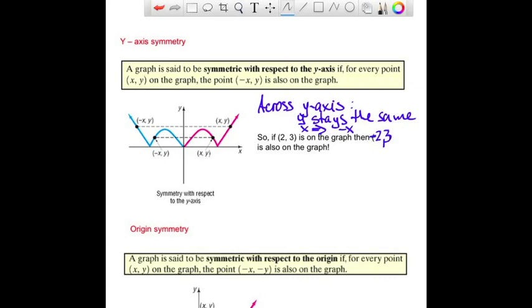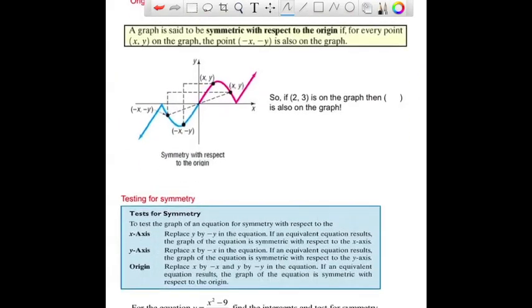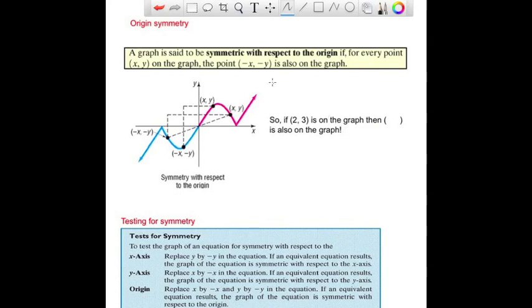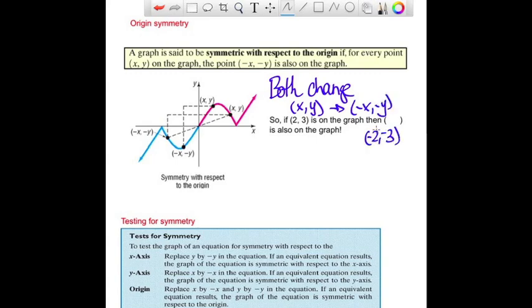And then we have one more type of symmetry, and that's origin symmetry. Origin symmetry, not really scientifically or mathematically, but both the values, both the x's and the y's are going to change. So what does that mean? That (x, y) becomes (-x, -y). So (2, 3) will be (-2, -3) if I have a graph with origin symmetry. That part's easy.